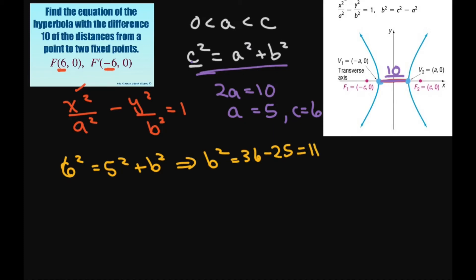So now all we have to do is write our equation. It's going to be x squared divided by a squared. Our a is 5, so a squared is 25. And then minus y squared. Our b squared is 11. So just write 11 equals 1. And that is your final answer.